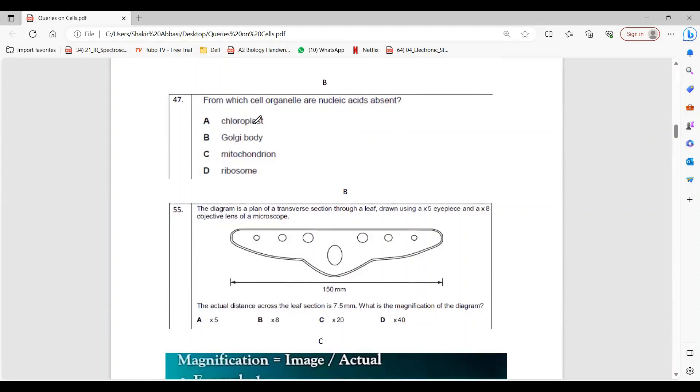Nucleic acid - because chloroplast has DNA and obviously RNA, mitochondria has DNA and RNA, and obviously ribosome has ribosomal RNA. So the option is beta.